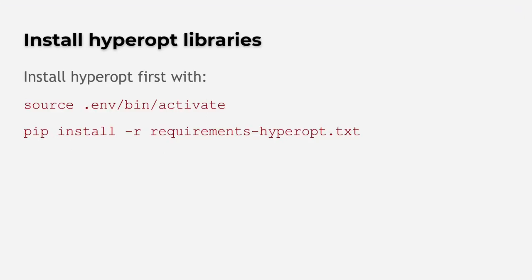Before I continue, you should know that if you have not installed the hyperopt libraries with the installation of FreqTrade, you can always install these with the installation command, which reads a file containing all the necessary hyperopt libraries. Docker users do not have to do this, because hyperopt libraries are installed in the docker container by default.